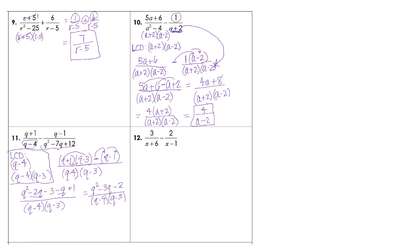What factors of 2 can we subtract and get 3? It doesn't look like there are any, so we're done. But you did need to check to see if it would factor, because the previous one did. So all of that is your answer.